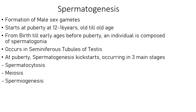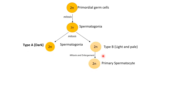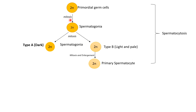The three main stages of spermatogenesis are: spermatocytosis, meiosis, and spermiogenesis. Let's look at the first two — spermatocytosis and meiosis. The primordial germ cells, where everything begins as unipotent cells, will proliferate via mitosis during spermatocytosis.